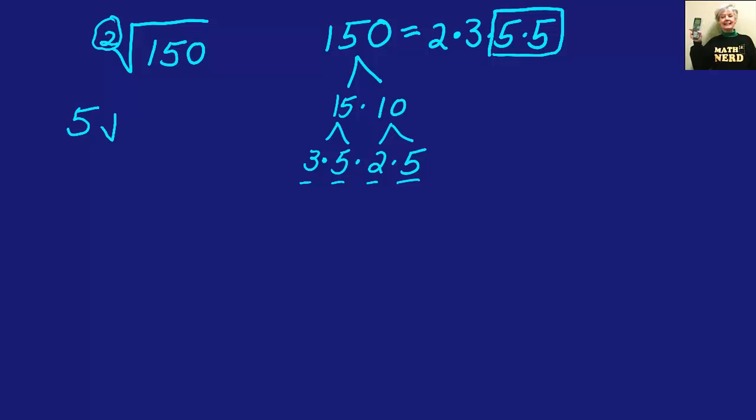I make the radical sign and then I write what's left. The 2 times 3, which we know is 6. 5 times the square root of 6 is the answer.